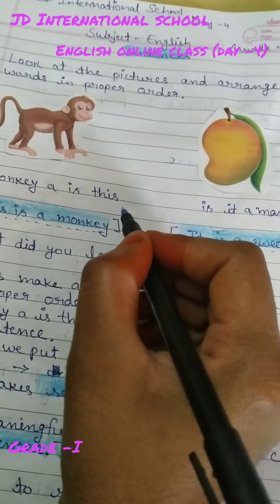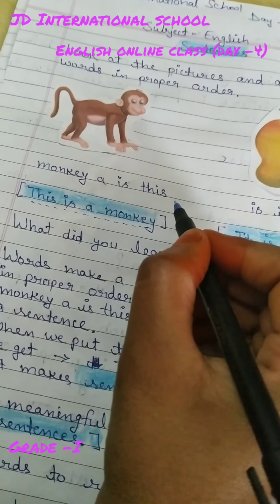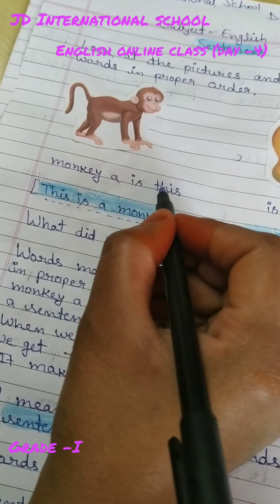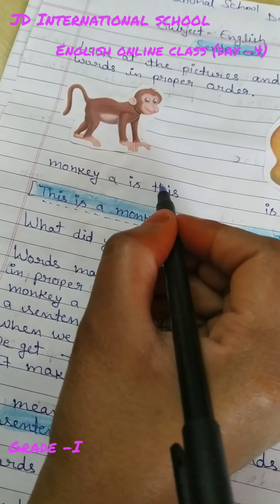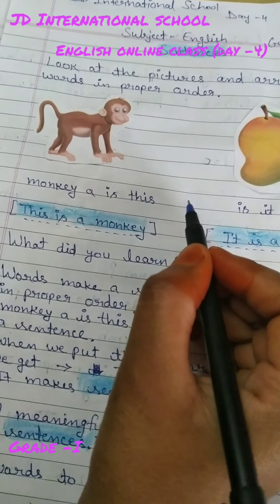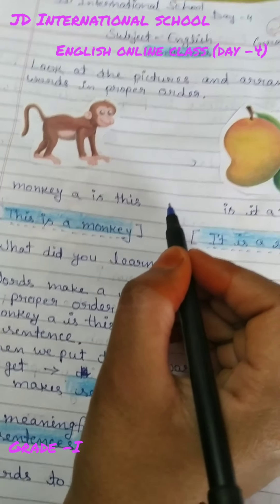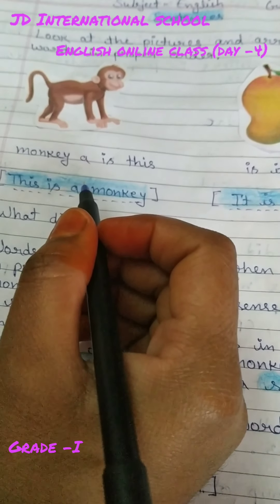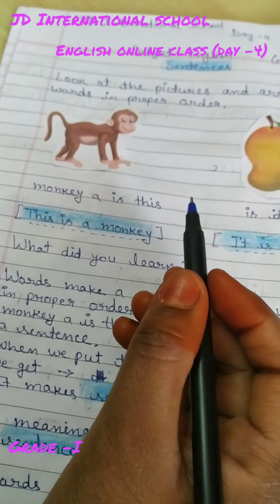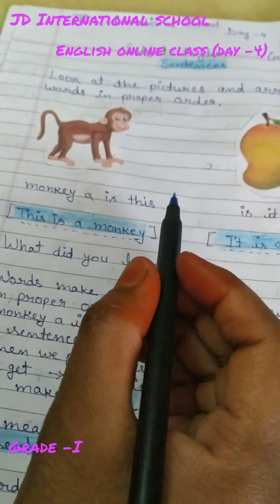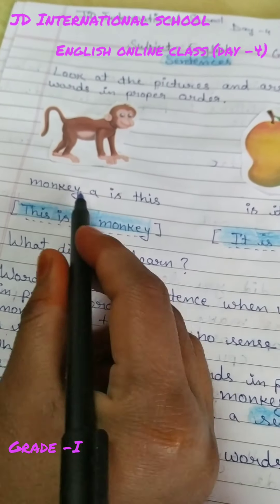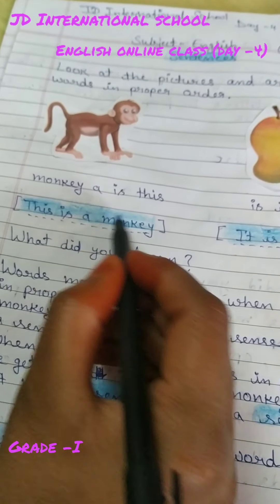Can you understand? No. Here are words not in proper order. These words are not in proper order. When we arrange them in proper order, it makes: 'This is a monkey.'